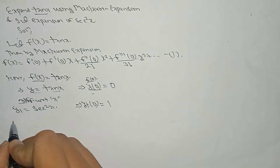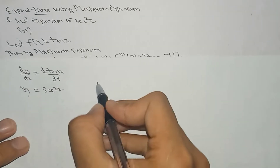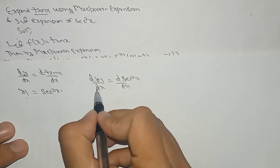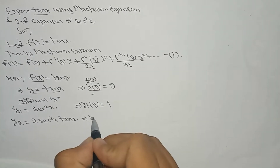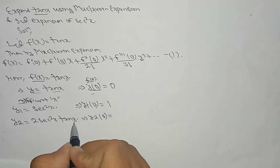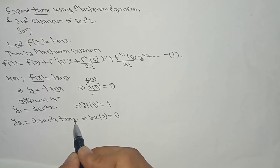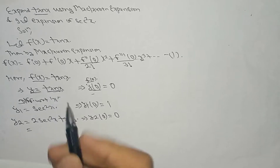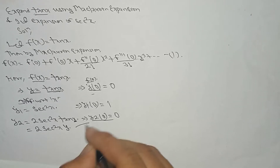Differentiating again: dy1/dx = d(sec²x)/dx. This gives y2 = 2·sec(x)·sec(x)·tan(x) = 2·sec²x·tan(x). Now y2(0): tan(0) = 0, so the whole expression becomes 0. Therefore y2(0) = 0. We can also write y2 = 2·sec²x·y, since y = tan(x).